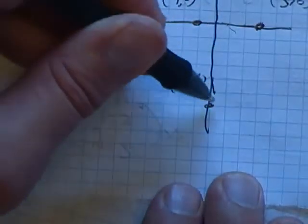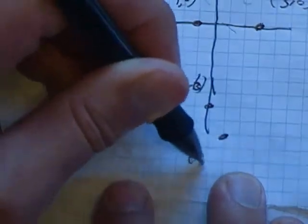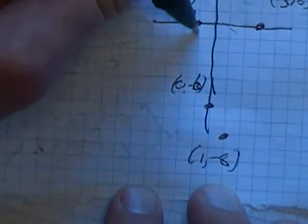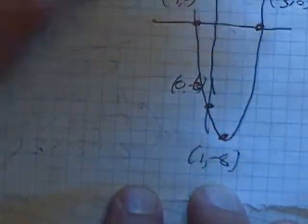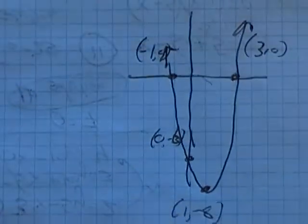So 1, negative 8, 6, 7, 8 is here. Label it. Sketch this thing. Done.